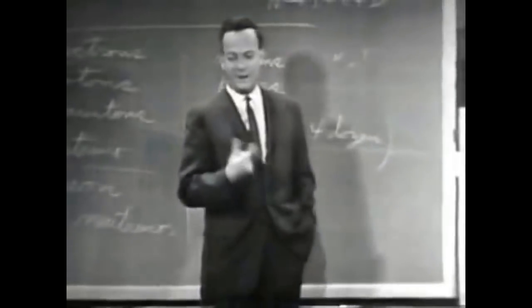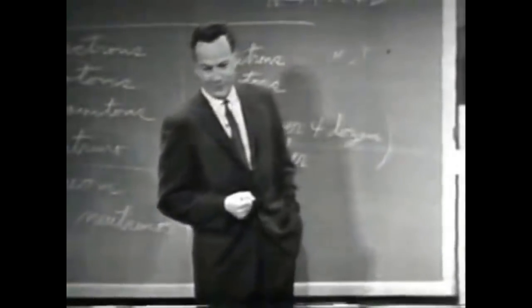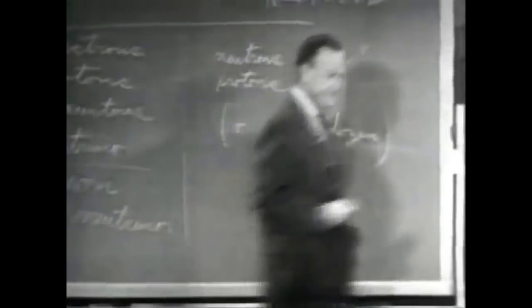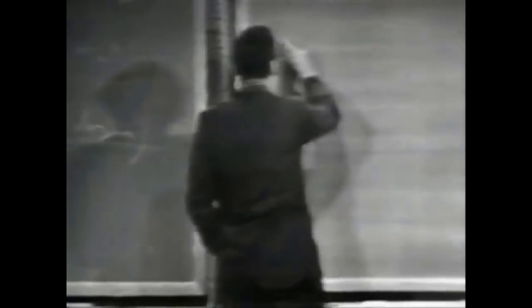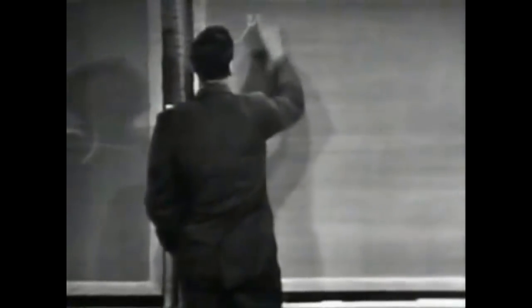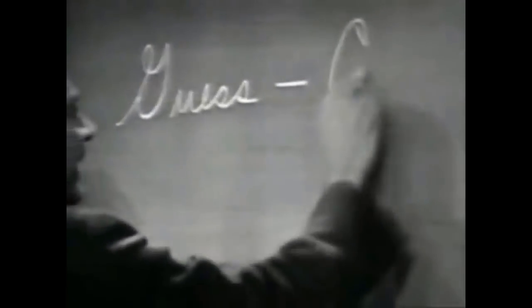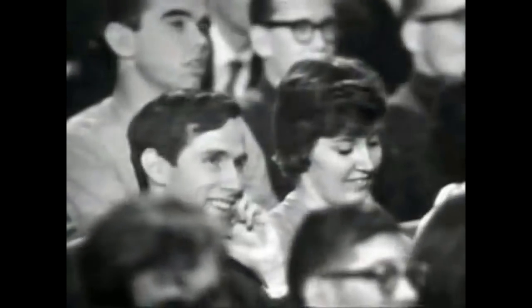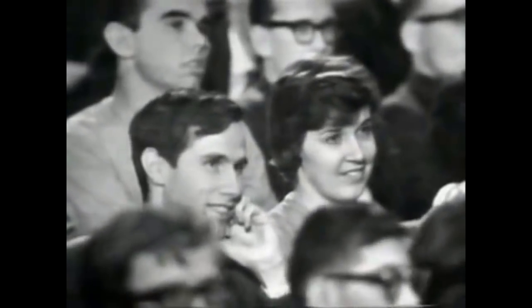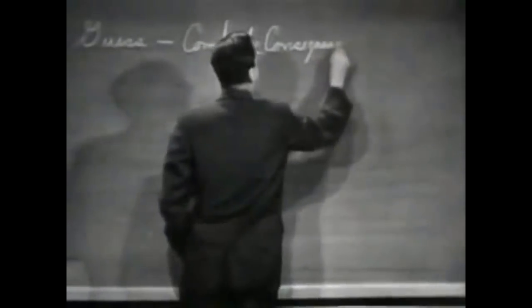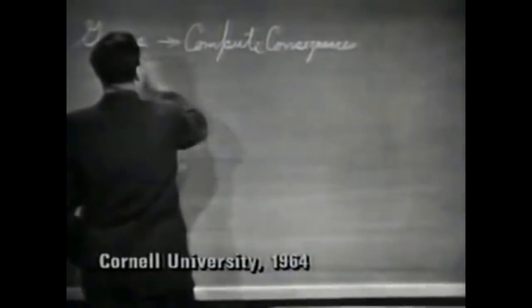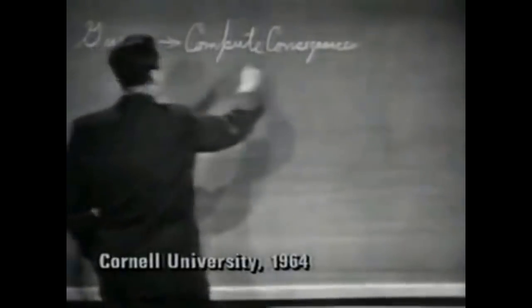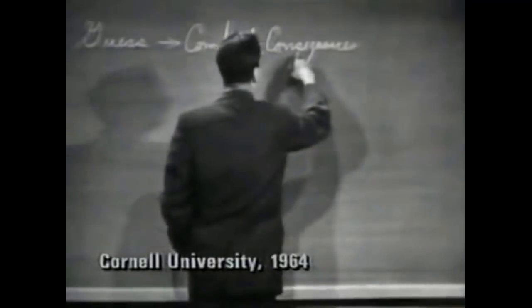Now I'm going to discuss how we would look for a new law. In general, we look for a new law by the following process. First, we guess it. Then we compute the consequences of the guess to see what — if this law that we guessed is right — what it would imply.